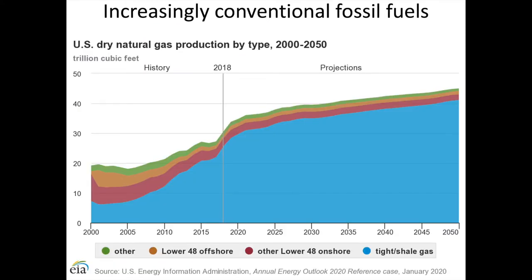One thing to emphasize is that while we call these fuels unconventional fossil fuels, they are increasingly important sources of oil and gas. Here's a diagram showing the production of different gas sources since the year 2000, which is when shale gas production really started to take off. You can see that by 2018, shale and tight gas made up 80% of the natural gas production in the United States. There is a similar pattern in oil production in the US. Tight oil was equal to about 63% of total US crude oil production in 2019.